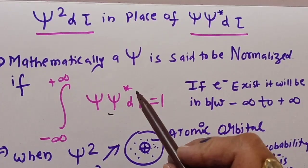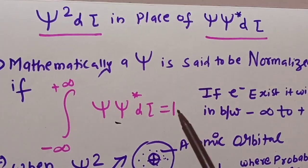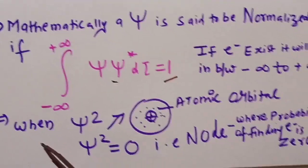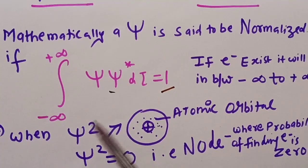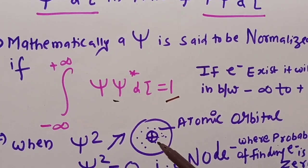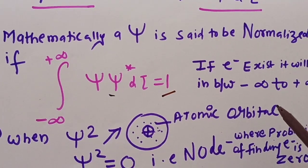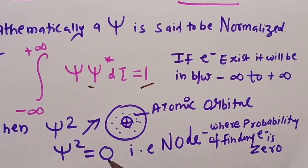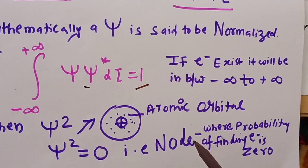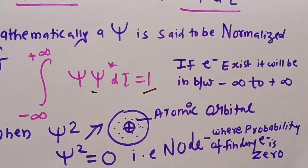When psi has normalized values, the integral from negative to positive infinity equals 1 or unity. When psi squared has high values, that means there is high electron density, and this electron density region represents an atomic orbital. If psi squared equals zero, that is the node — the region where the probability of finding an electron is zero.